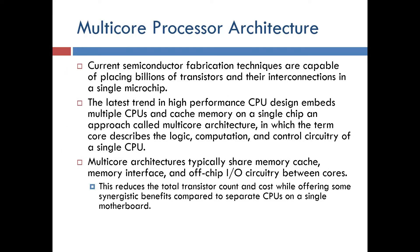Current semiconductor fabrication techniques are capable of placing billions of transistors and their interconnections in a single microchip. The latest trend in high-performance CPU design embeds multiple CPUs and cache memory on a single chip, an approach called multi-core architecture, in which the term core describes the logic, computation, and control circuitry of a single CPU. Multi-core architectures typically share memory cache, memory interface, and off-chip I/O circuitry between cores, reducing total transistor count and cost while offering synergistic benefits compared to separate CPUs on a single motherboard.